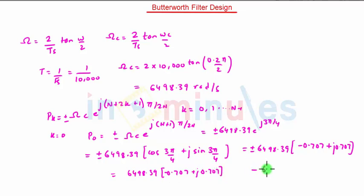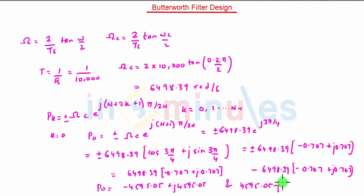And another point is that minus 6498.39 minus 0.707 plus j0.707. So P0 equals minus 4595.05 plus j4595.05 and 4595.05 minus j4595.05. So this is the pole 0.